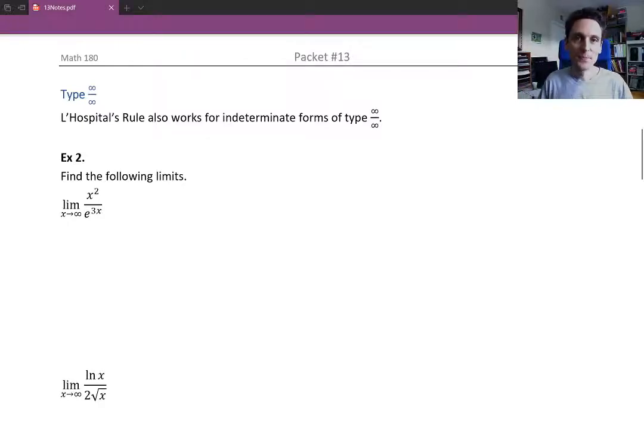Hello and welcome back. It turns out that L'Hopital's rule can be used not only for indeterminate forms of type 0 over 0, but also for indeterminate forms of type infinity over infinity. And here infinity represents either positive infinity or negative infinity, so plus or minus infinity over plus or minus infinity.